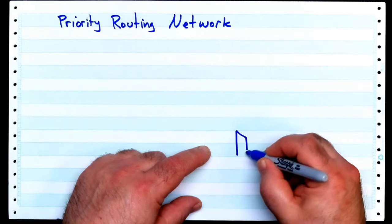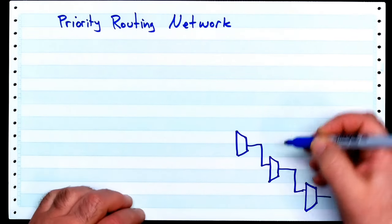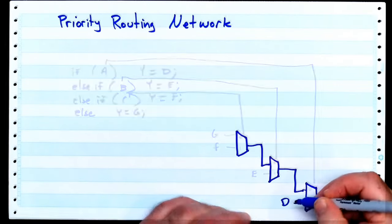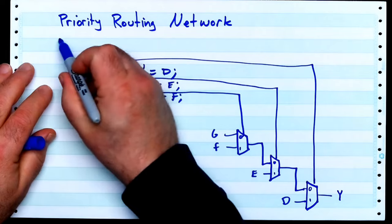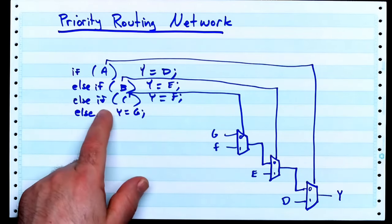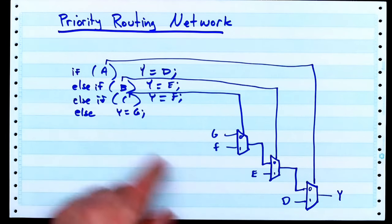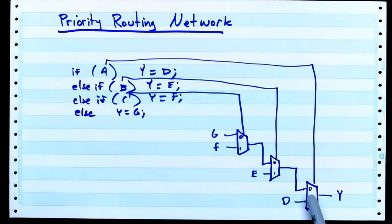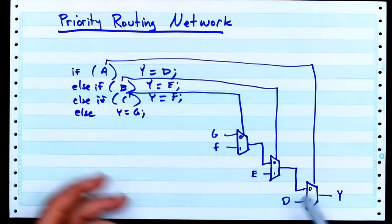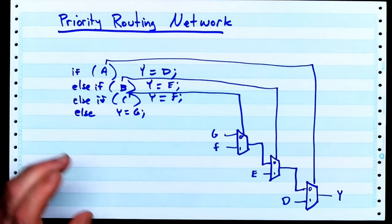Today I want to talk about priority routing networks and what they mean, why they exist, and how they get created when we write Verilog code. So here is our priority routing network and here's one way that you can create one with an if, else if, else if kind of thing like this. Now let's look at this cascade of multiplexers over here. I've drawn it like stair steps to make it really obvious what's going on. This is your priority routing network and this is the classic example of how you can create one in Verilog.